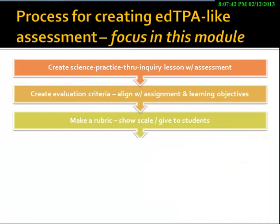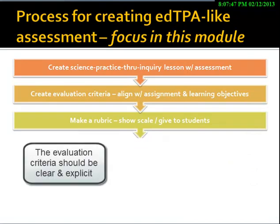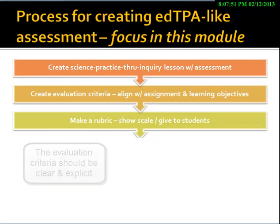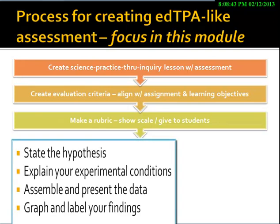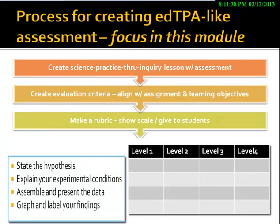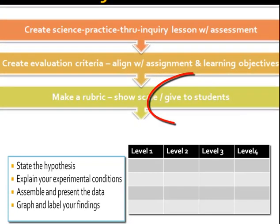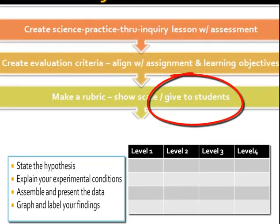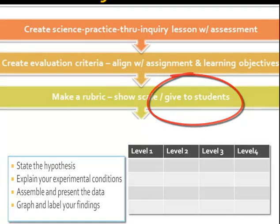Then, to guide your students so they will understand your expectations and the way you will grade their work, you will create very explicit evaluation criteria. These criteria should both align with the assignment and with the learning objectives that you created for the lesson. You will develop a rubric that will show how performance on each evaluation criteria will be associated with the scale value, and you would give this rubric and evaluation criteria to your students to help guide their work.